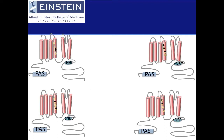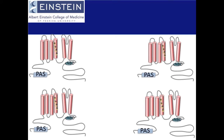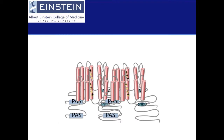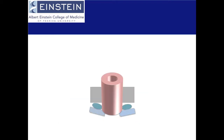To make the potassium channel responsible for the IKR current, HERG tetramerizes. This creates a channel with a pore, and allows for potassium to move across the cell membrane.